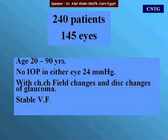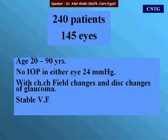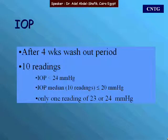The study included 145 eyes, aged between 20 to 90. Several IOP readings were taken, none of which should be higher than 24 mmHg. Patients should have characteristic visual field changes and disc changes of glaucoma. Follow-up was done as long as the field was stable. Once progression in the field or disc was noted, randomization started, following a four-week washout period with ten readings taken, none higher than 24 mmHg.